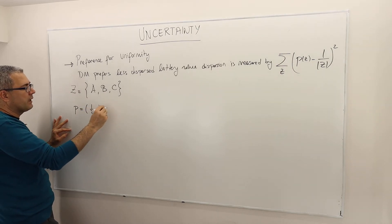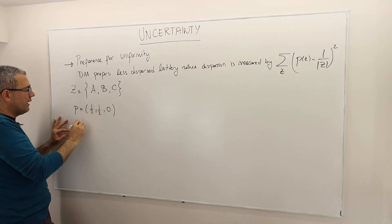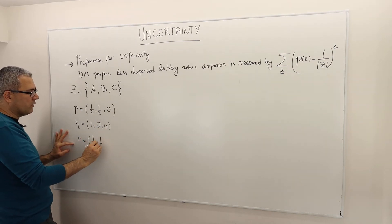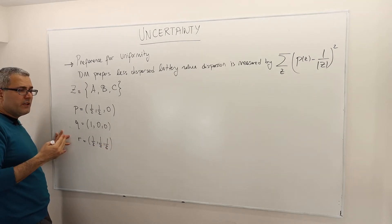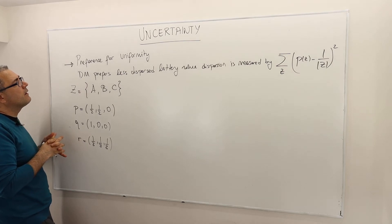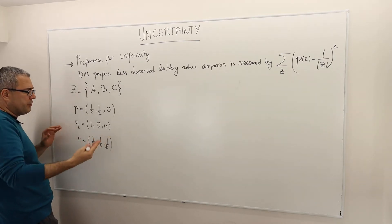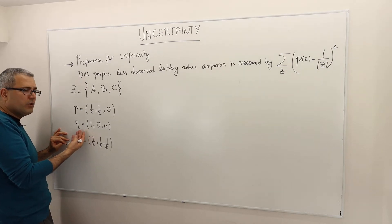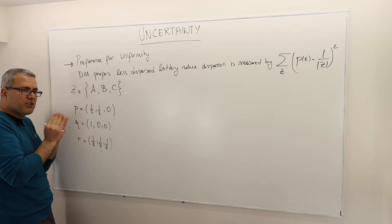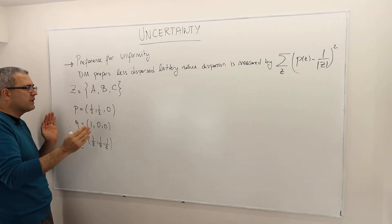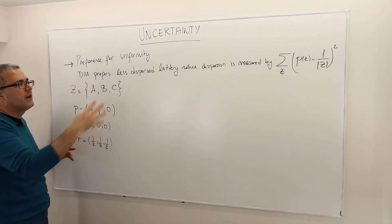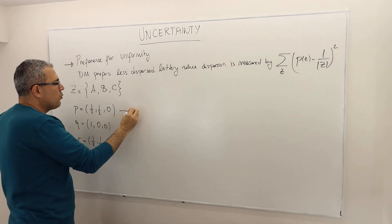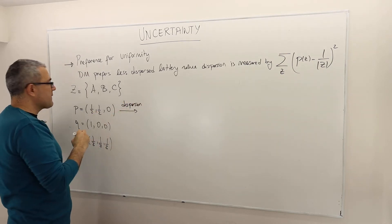Lottery one: A and B can happen equally likely, C will not occur. The other lottery: A is going to occur, B and C will never occur. And lottery R: everything is equally likely. So intuitively, the more uniformly distributed scenario is R — R should be the least dispersed lottery. Lottery two is concentrated on one outcome, so it should have the highest dispersion. And lottery one is in the middle. So this formula measures dispersion.